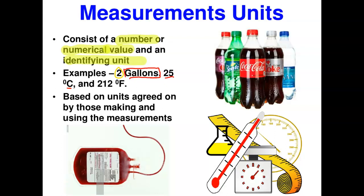Every measurement consists of a number and a unit. For example, 212 degrees Fahrenheit — this is the number and this is the unit. These units are based on an agreed set of meanings; people have to come together and agree on them. It is a better way of communication.